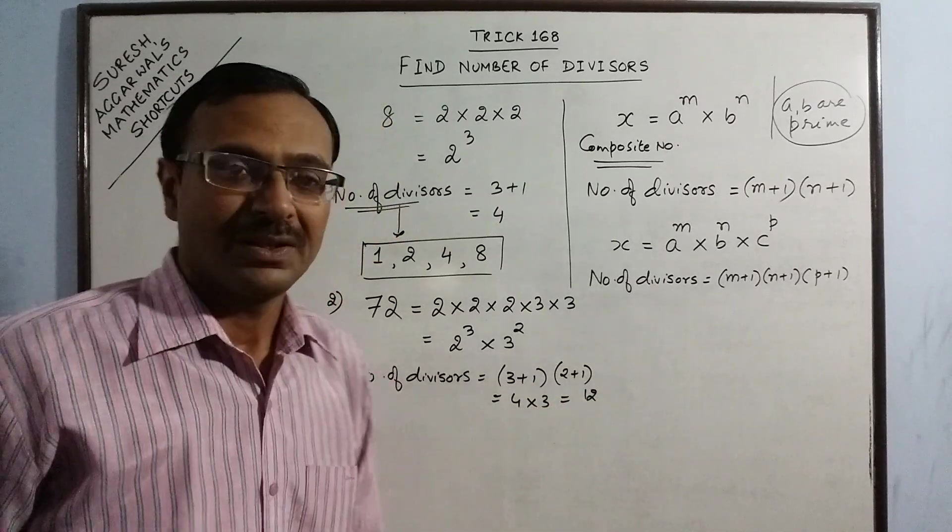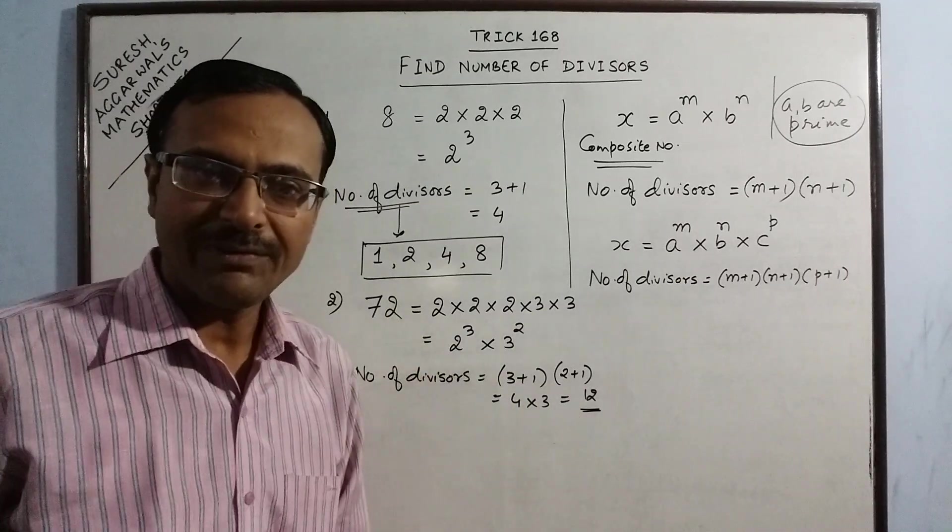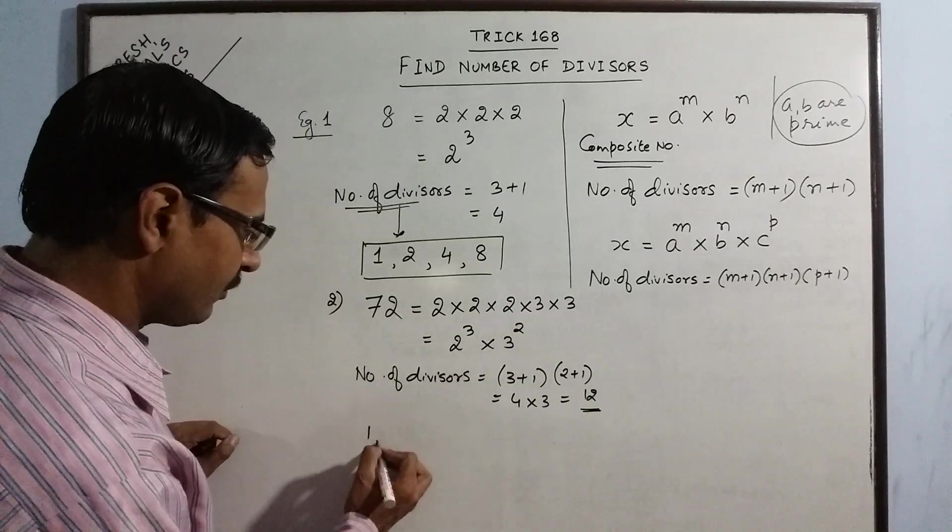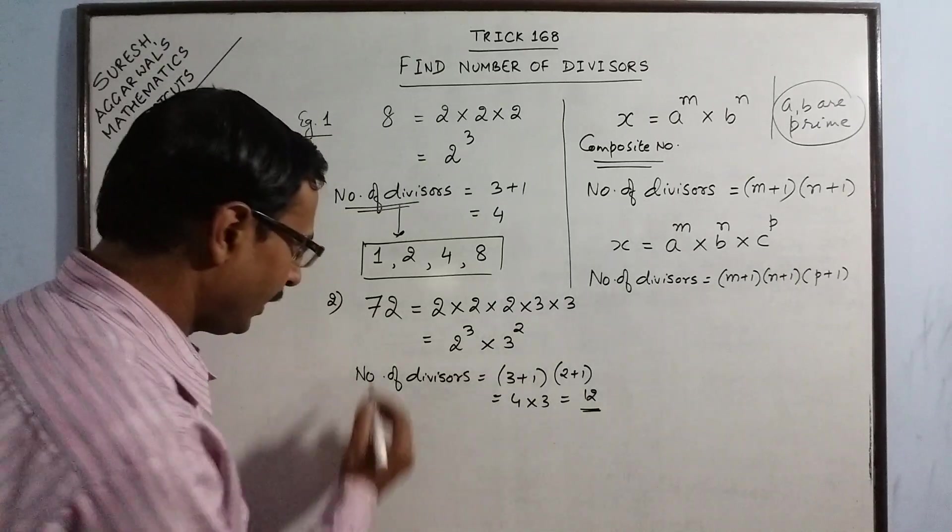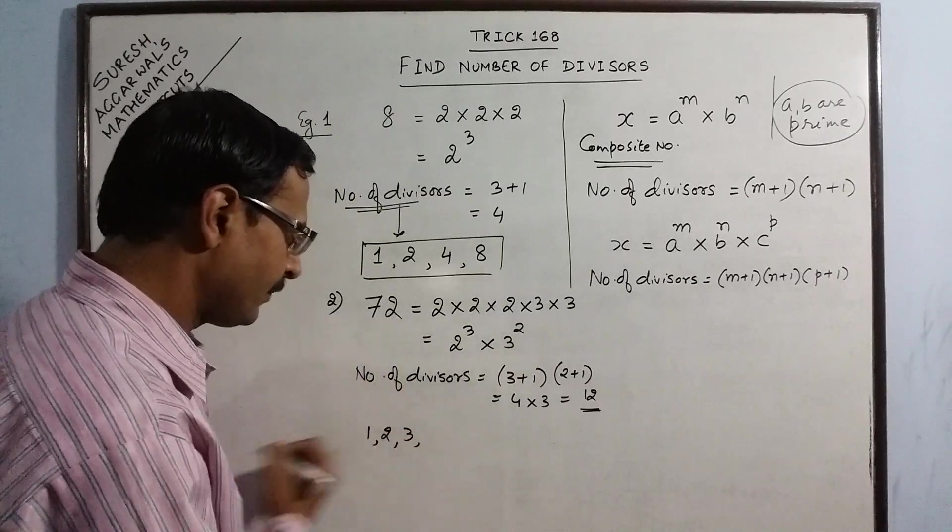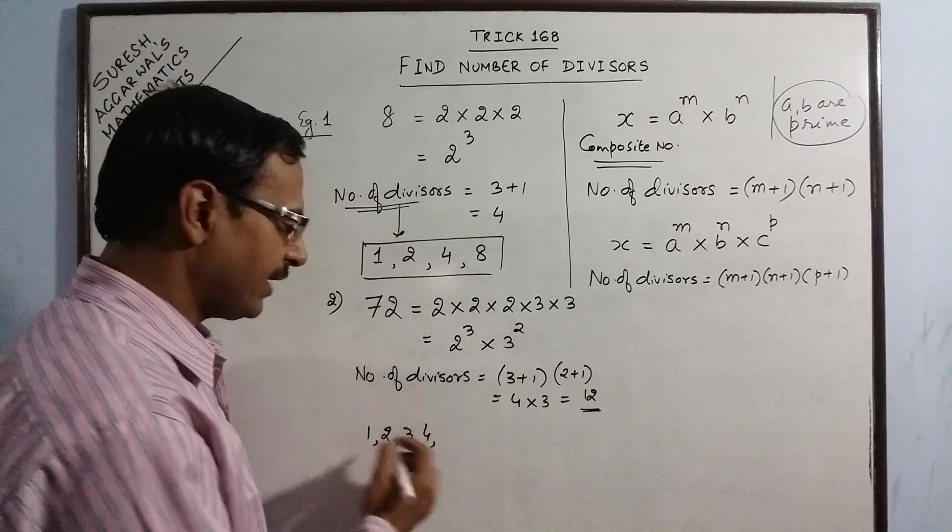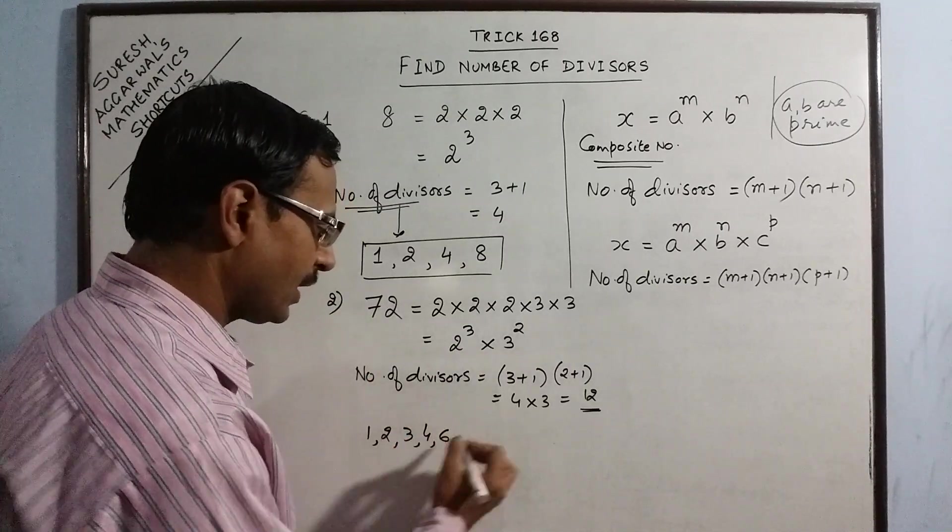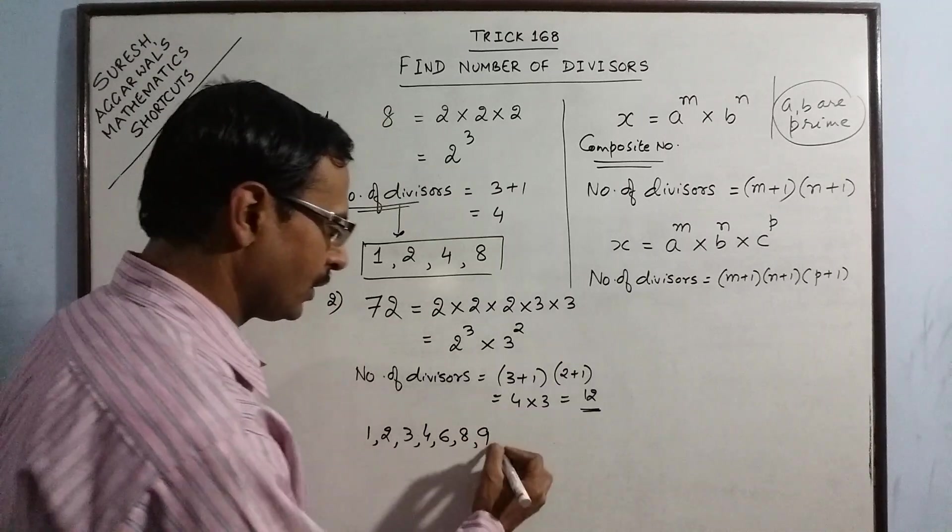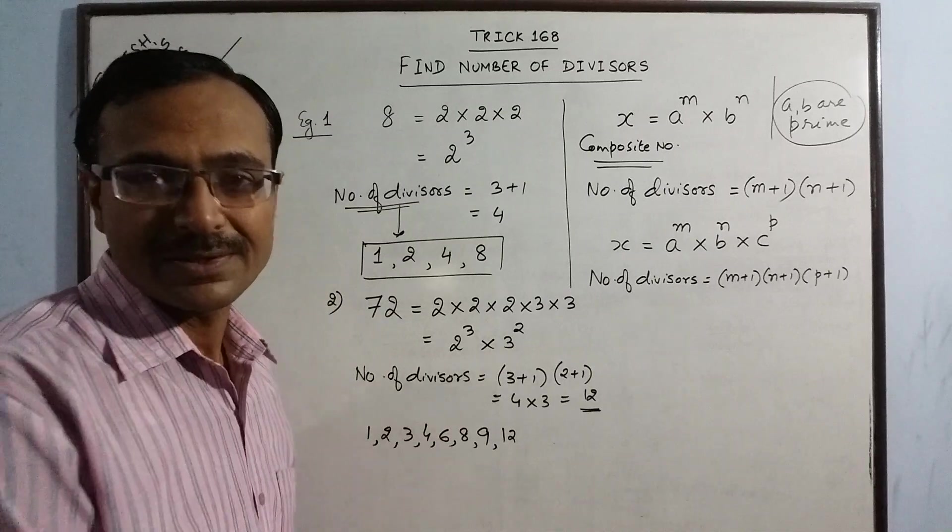So the divisors of 72 are 12 in number and if you want to verify it, yes we can solve this. Say the divisors are 1, we have to start from 1. Then obviously it is divisible by 2, divisible by 3, divisible by 4, not with 5, then with 6, 8, 9, 12. So these are some of the factors.